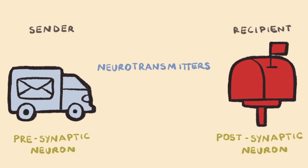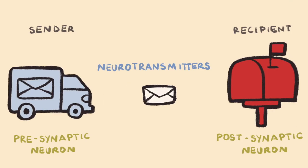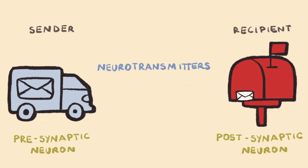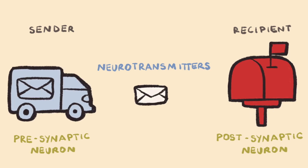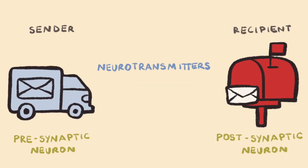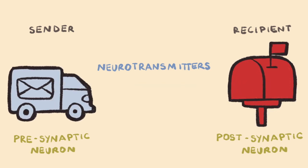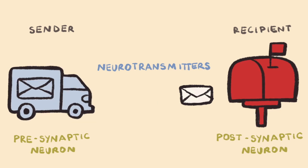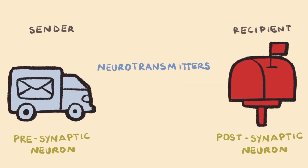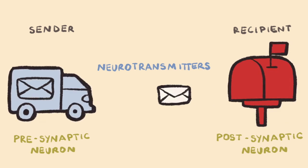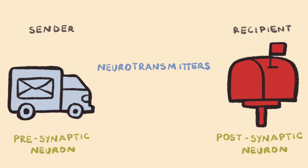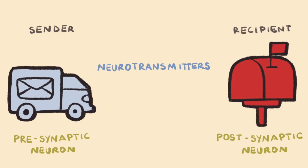This is how neurotransmitters are released from an excited presynaptic neuron to spread the signal onwards to a postsynaptic neuron. A similar process will occur where neurons meet muscles and where neurons meet glands.